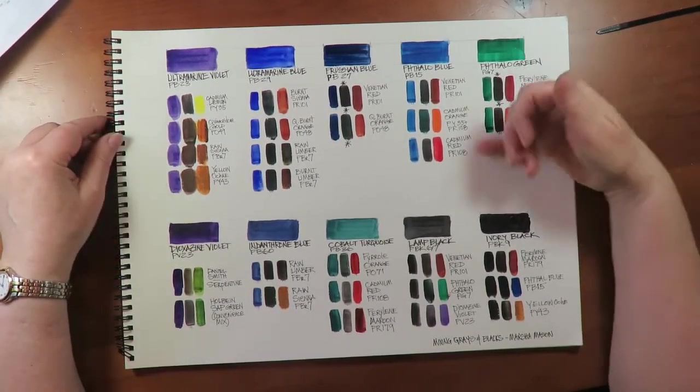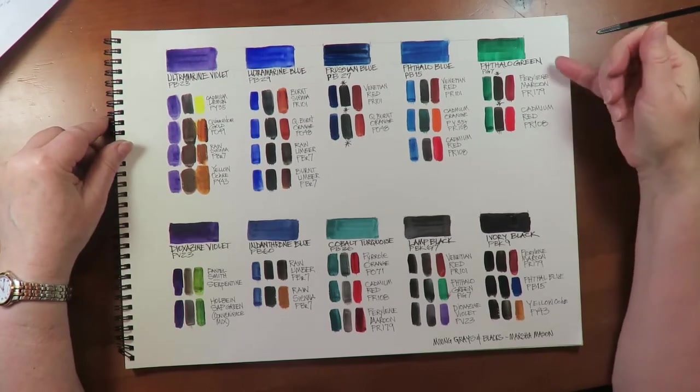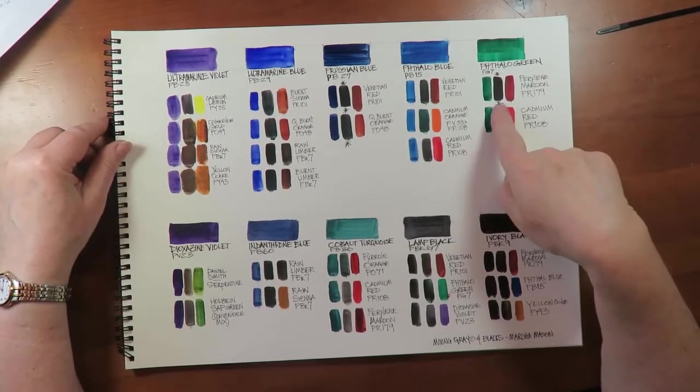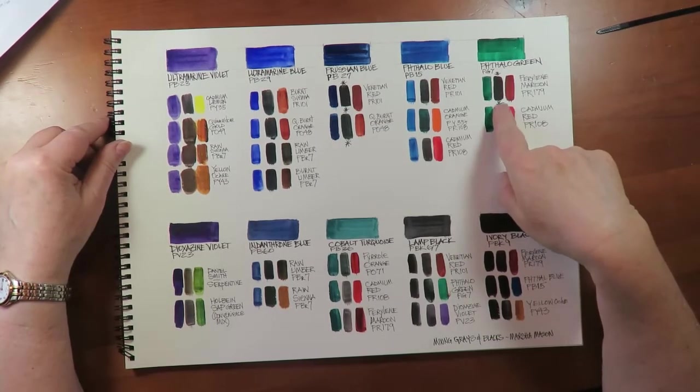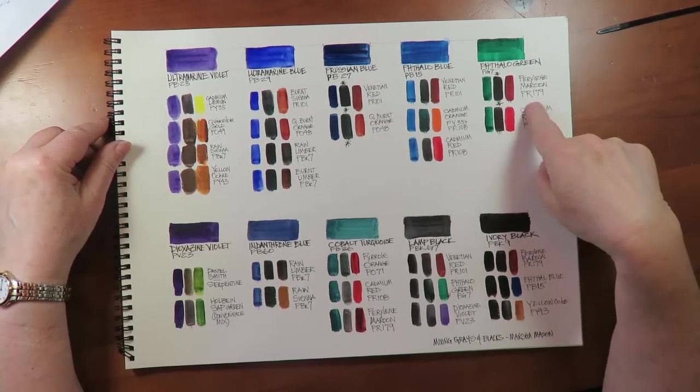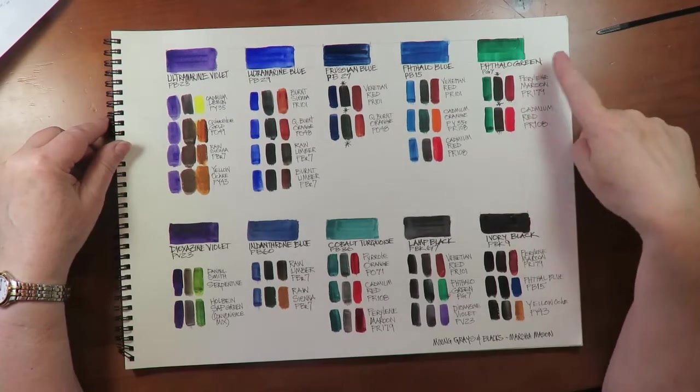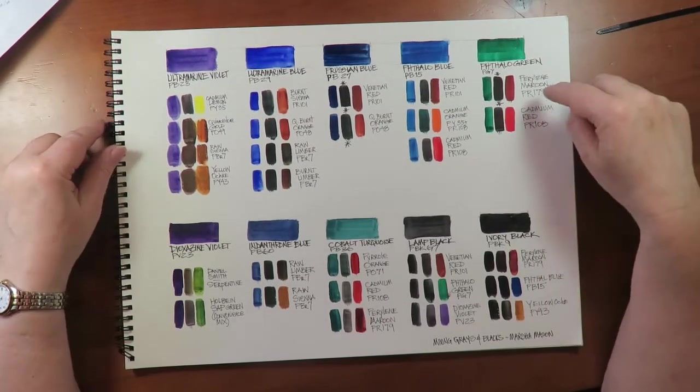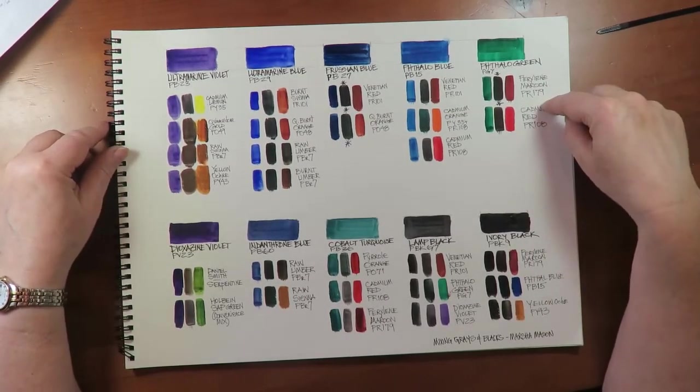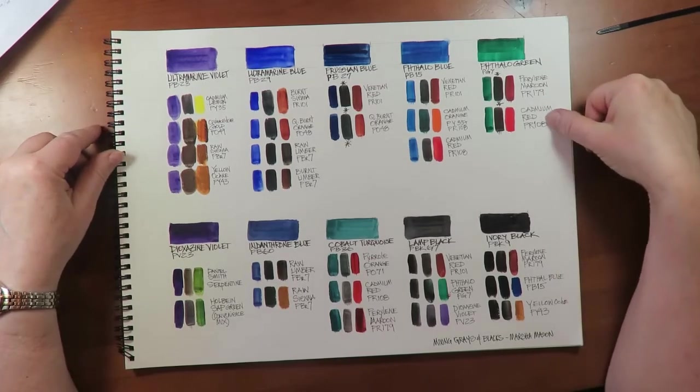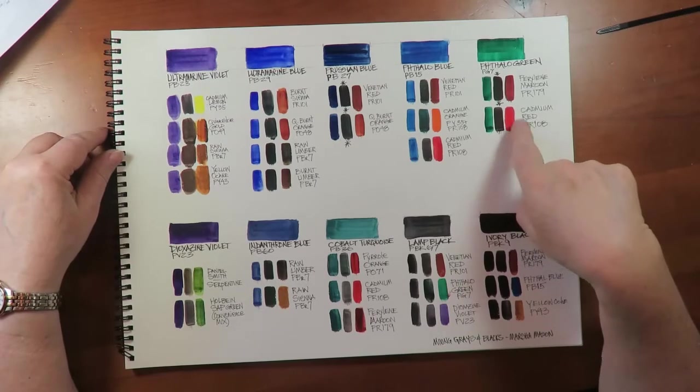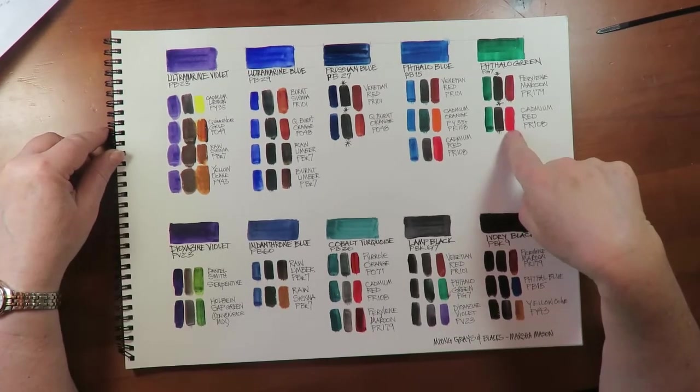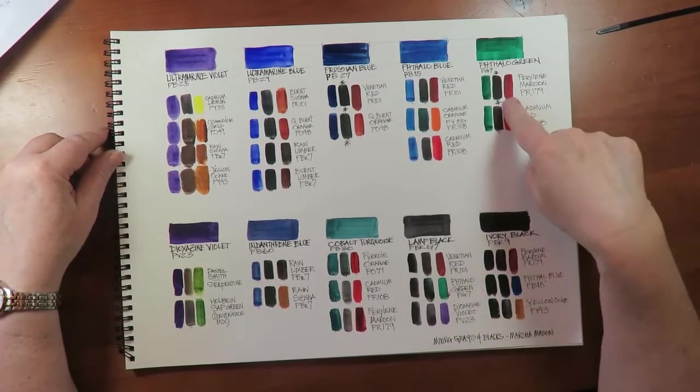Phthalo green, the basis for a lot of the convenience greens mixtures, makes a very dark black, darker than the carbon blacks out of a tube with perylene maroon. One of my favorite mixing colors and one of my least favorite colors right out of the tube. And then here, a cad red, again, it's a higher chroma warm color than the perylene maroon.